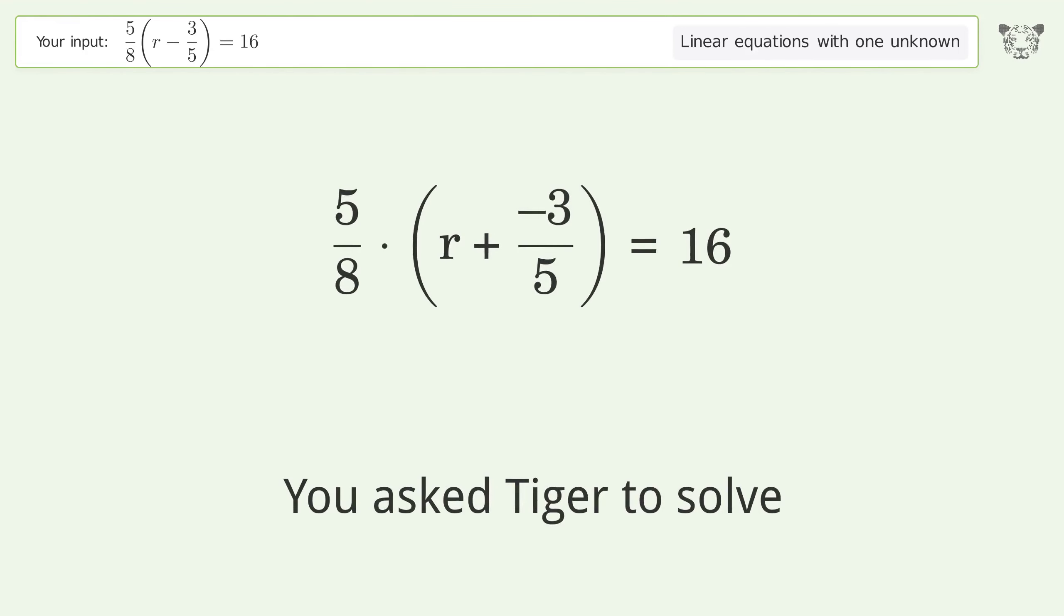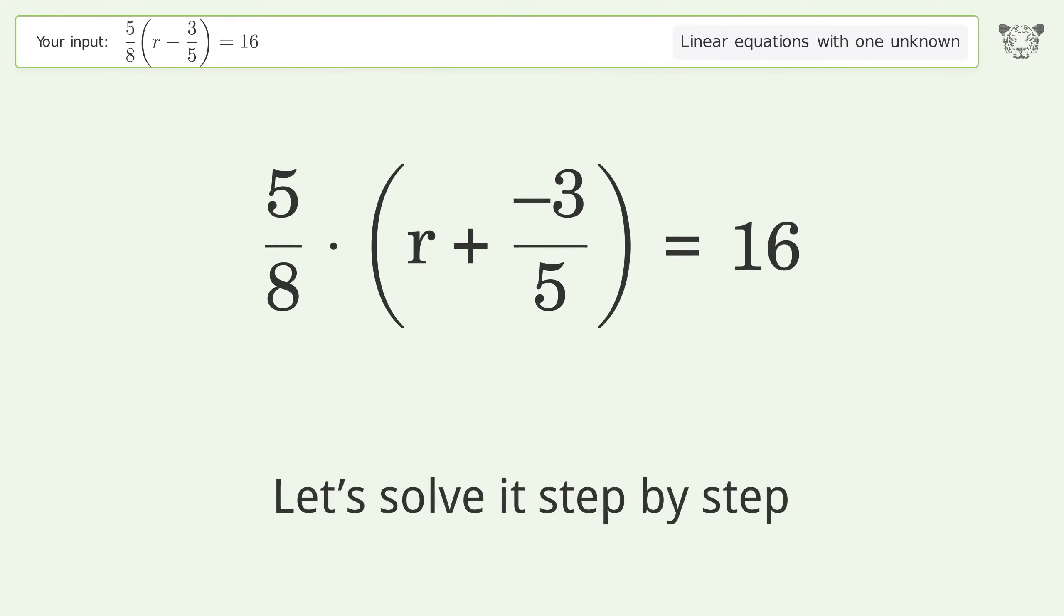You asked Tiger to solve this, which deals with linear equations with one unknown. The final result is r equals 131 over 5. Let's solve it step by step. Simplify the expression, multiply the fractions.